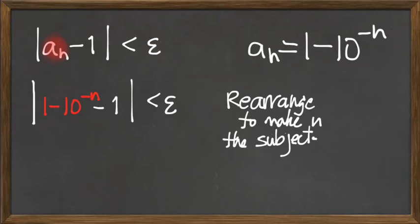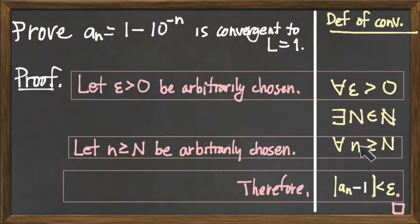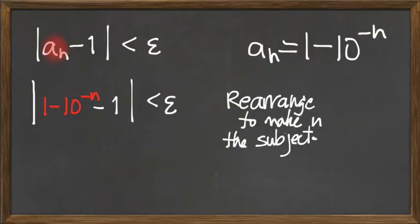And if we do that, we'll probably get another inequality that looks like the n greater than or equal to n that we're trying to substantiate. So that's our goal. And this is now an algebra problem, for which I can take 1 minus 1 inside the absolute values. Those go away. We end up with minus 10 to the minus n less than epsilon. 10 to the minus n is positive, so minus 10 to the minus n is negative. So its absolute value is just 10 to the minus n.